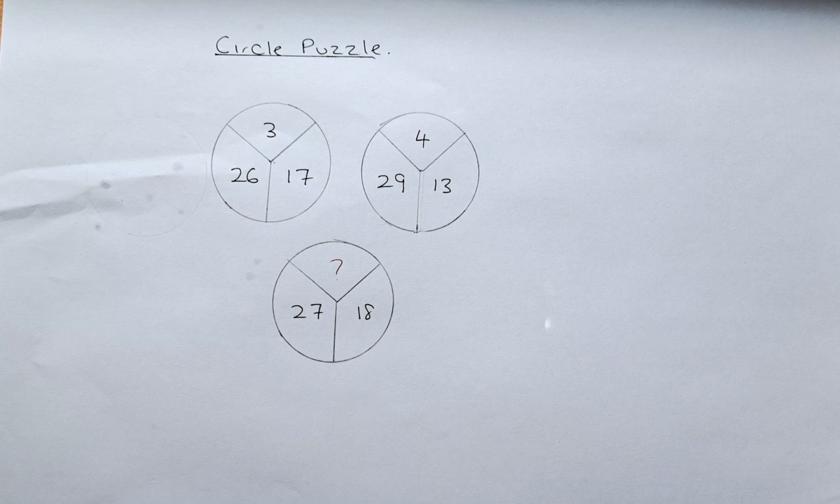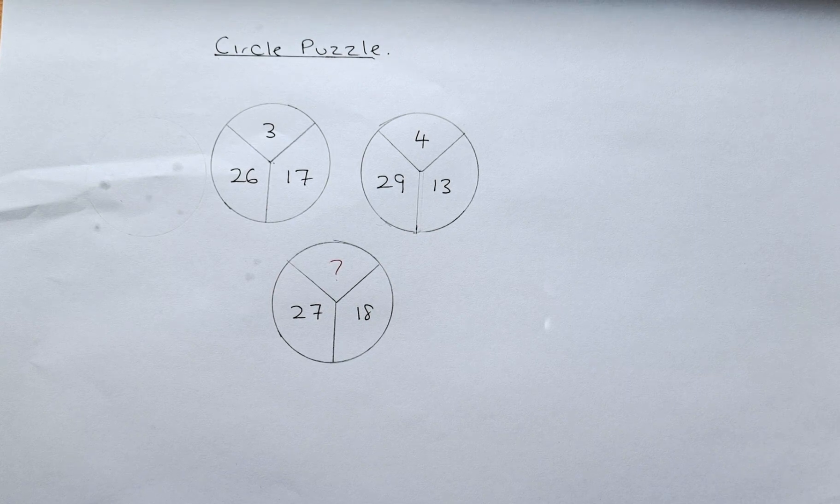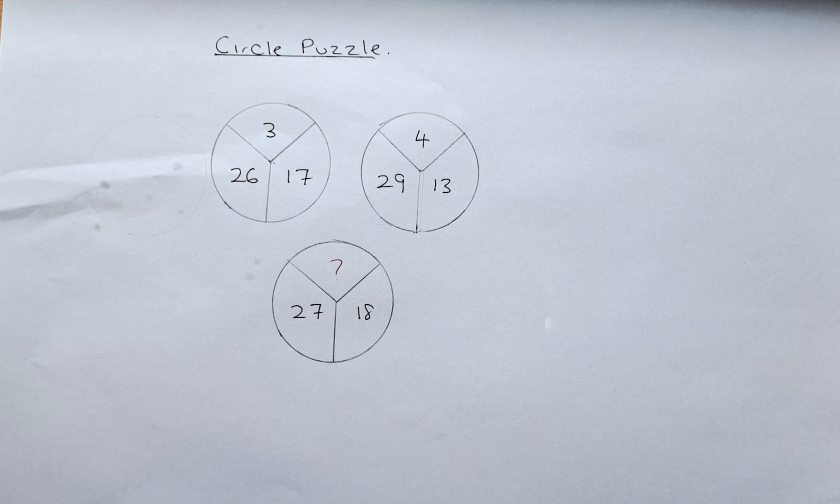In front of us there are three circles. The first circle has the numbers 3, 26, and 17. In the second circle, the numbers are 4, 29, and 13.